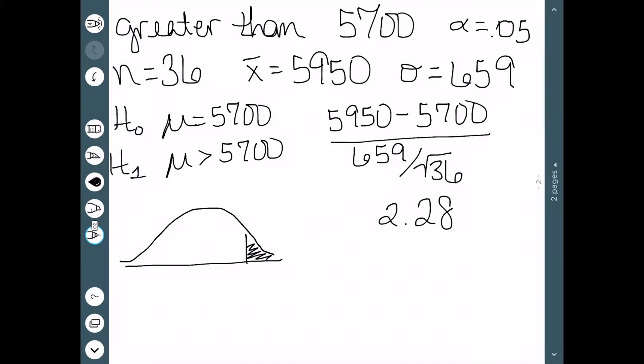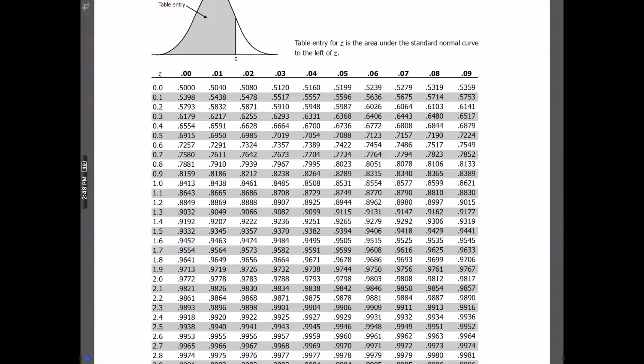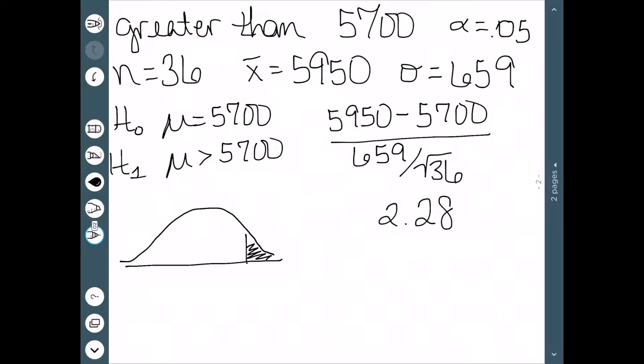In order to find the p-value, we still need our z-table. Going to our z-table, we knew our test value was 2.28 and we actually want to find the corresponding area. So we go down to 2.2 and over to 8 to get .9887. So we know that .9887 corresponds to the area to the left. Since we want a right-tailed test, we need to do 1 minus .9887, which is .0113. And this right here is the p-value.